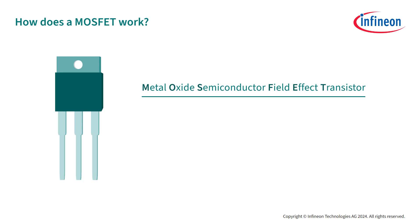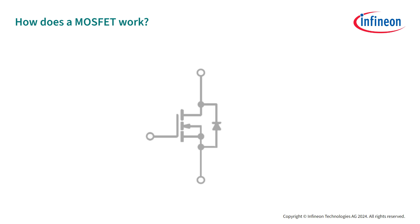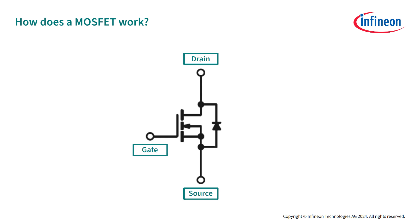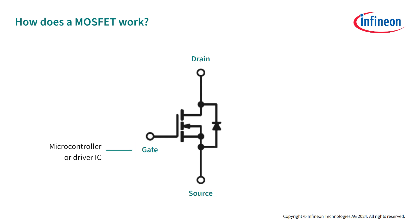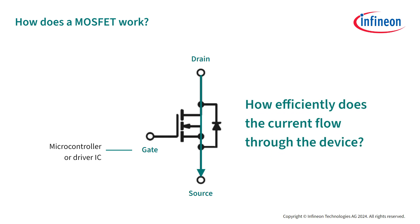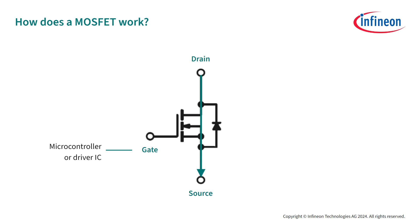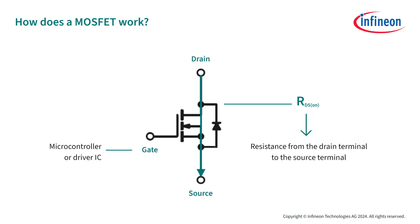Now that you are aware of what a MOSFET is, let's see how it works. A MOSFET is a voltage-controlled device composed of a gate, a source, and a drain. The gate voltage is typically provided by a microcontroller or driver IC. By applying this gate voltage to the gate terminal, the current will start to flow from the drain to the source terminals. We can obtain information on how efficiently the current flows via the RDS-ON rating of the device. The RDS-ON is the resistance from the drain terminal to the source terminal when the device is on, measured in ohms or milli-ohms. If you remove the gate voltage, the current flow will stop.